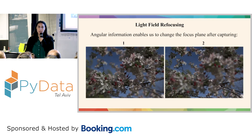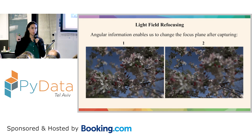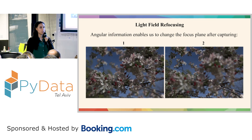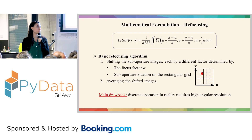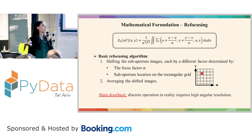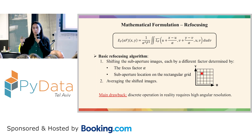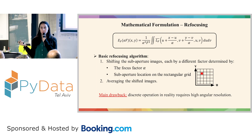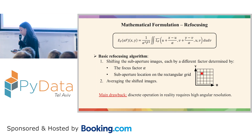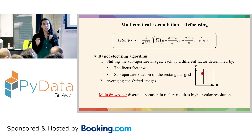The angular information enables us to change the focus plane after we capture the image. After we already took the image, we can generate a series of images, each one focusing on a different object. To get a refocused image, we take each one of the sub-aperture images and shift it by a factor determined by two things: alpha, the focus factor, which tells us which object we want to focus on; and the location of that specific sub-aperture image on the grid. Then we sum the shifted images and divide by the number of them.